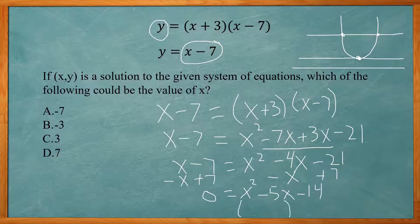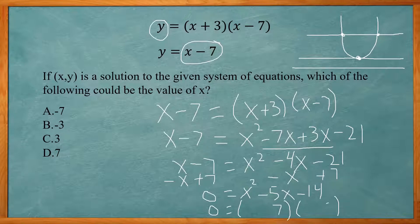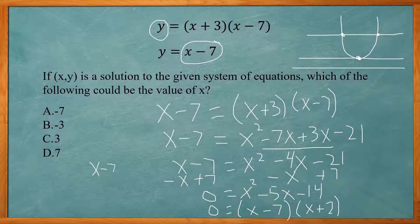Now I need to factor. I need two numbers that multiply to give −14 and add up to −5. That's going to be −7 and +2, since −7 times 2 = −14 and −7 + 2 = −5. So I can set both factors equal to 0: x − 7 = 0 and x + 2 = 0.